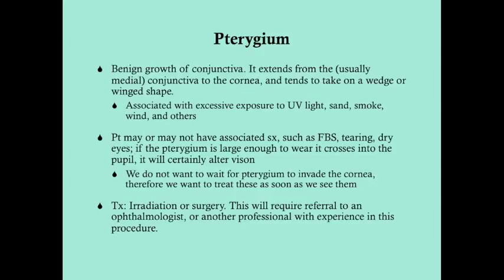Pterygium is also associated with excess exposure to UV light, as well as exposure to sand, smoke, wind, and other things that can irritate the conjunctiva. The patient may or may not have symptoms. If there are symptoms, they include foreign body sensation, tearing, and dry eyes. If the pterygium is large enough to cross into the pupil, it will alter vision because it distorts whatever you're seeing.